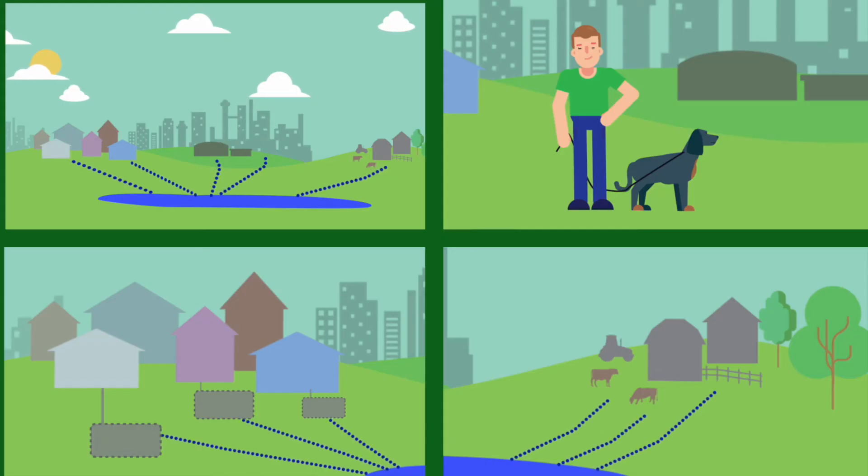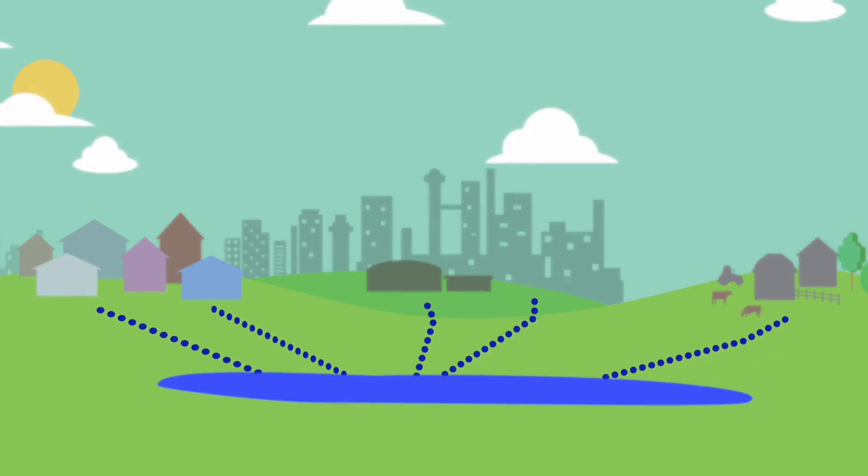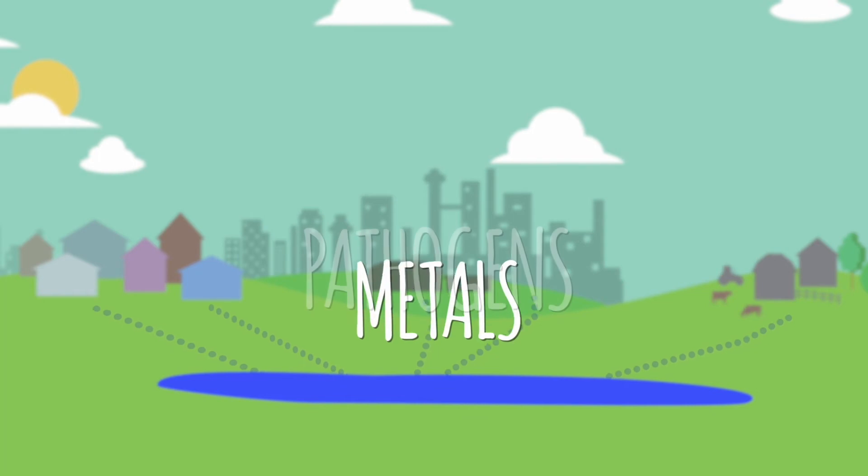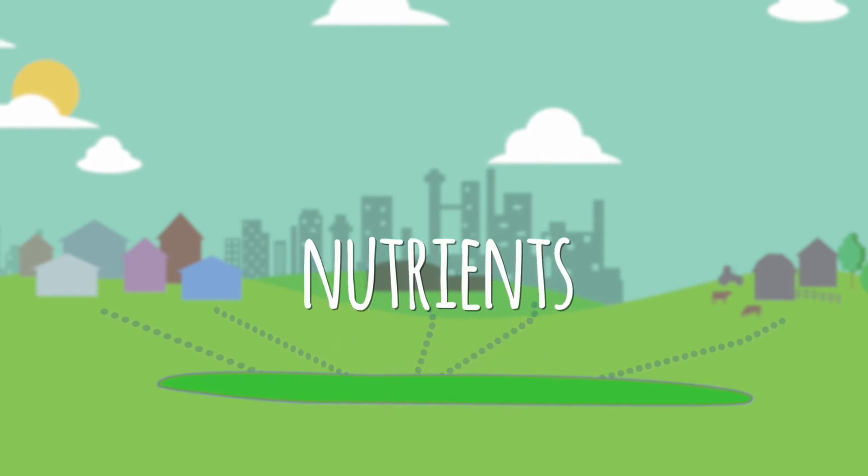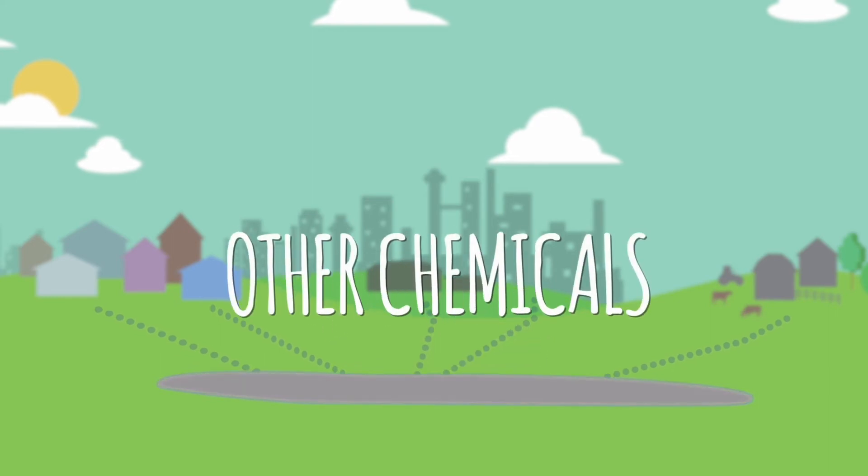All these things can have a negative impact on water quality. The runoff from these sources can contain things that affect the balance and health of our water basins, including metals, pathogens, nutrients like phosphorus and nitrogen, sediment, and other chemicals.